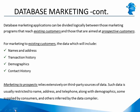Marketing to prospects relies extensively on third-party sources of data, which are generally restricted to name, address, and telephone along with demographics. If you obtain transaction detail related to another industry, the data compiler needs to conduct studies to conclude that surrogate information can be tied back to the type of customer that you, as a bank, want to target.